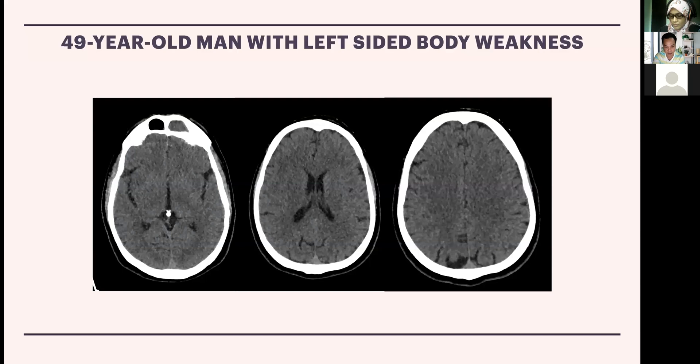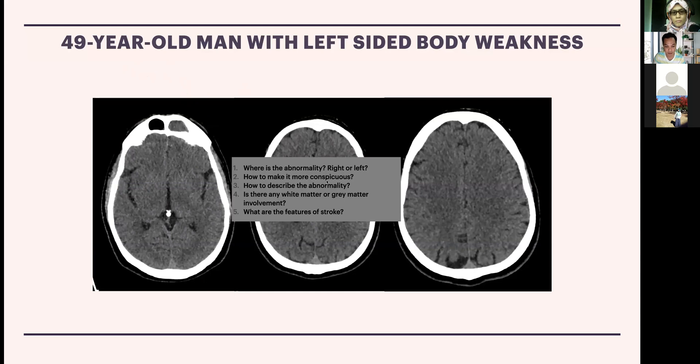Before going to anatomy, I want to show a plain CT brain in axial section. This 49-year-old patient presented with left-sided body weakness, and we can actually see stroke changes on this scan — very subtle. The questions that arise are: where is the abnormality, is it right or left, how do we make it more conspicuous, is there gray or white matter involvement, and what are the features of stroke here? Hopefully by the end of this presentation we can answer all these questions.